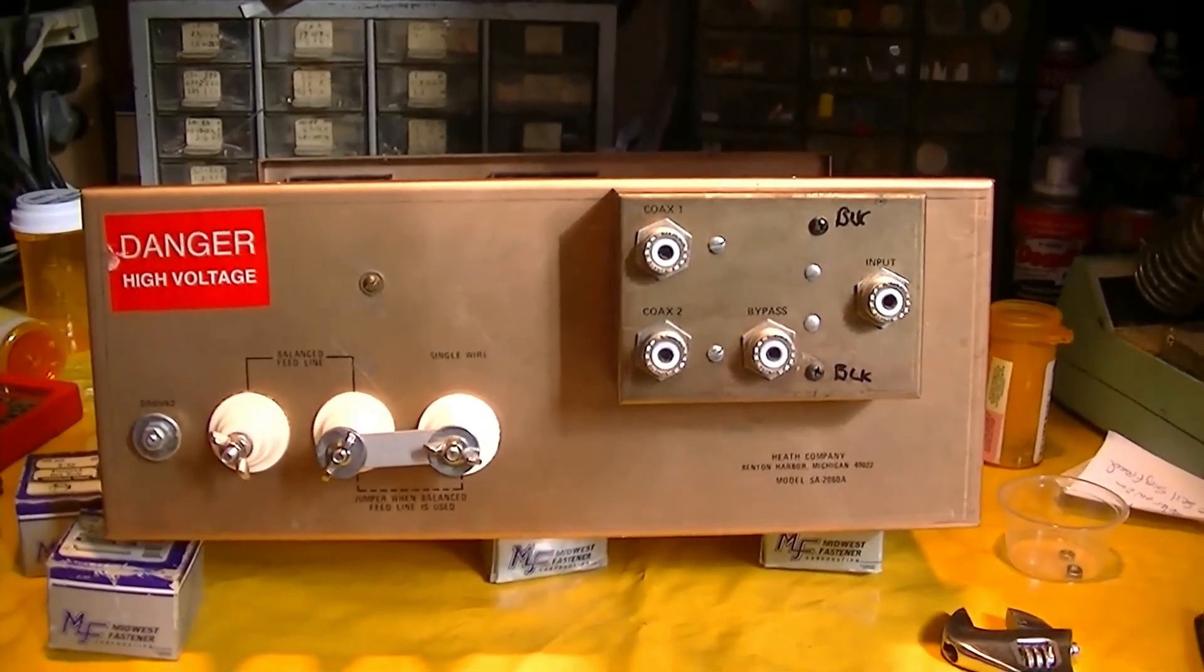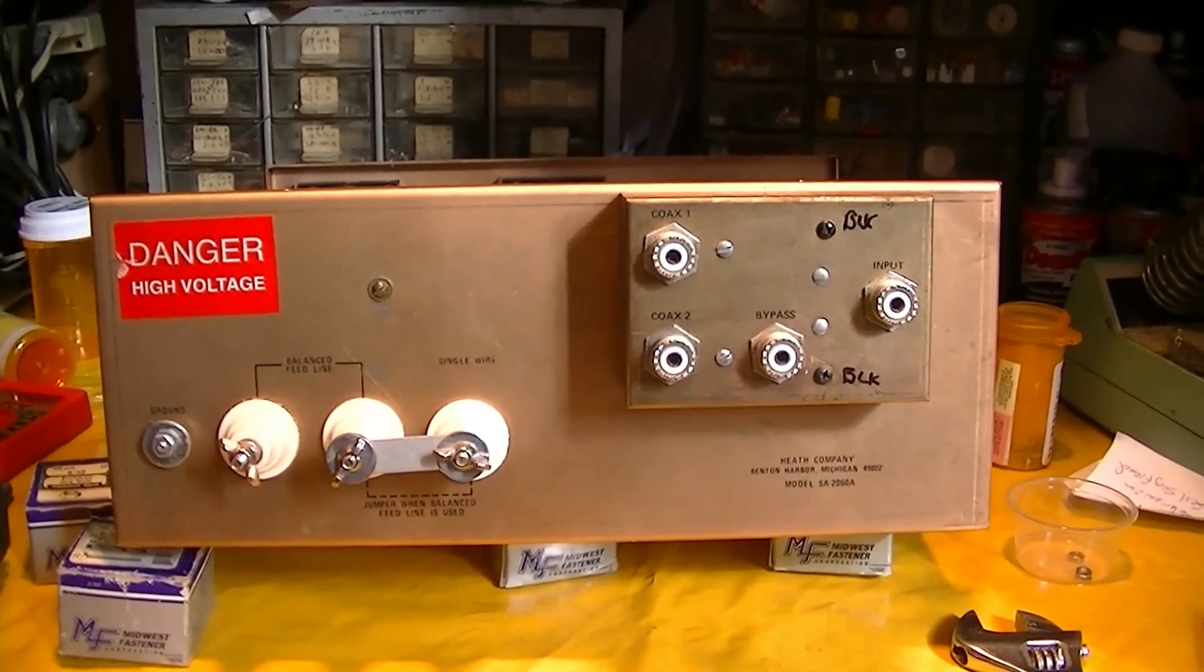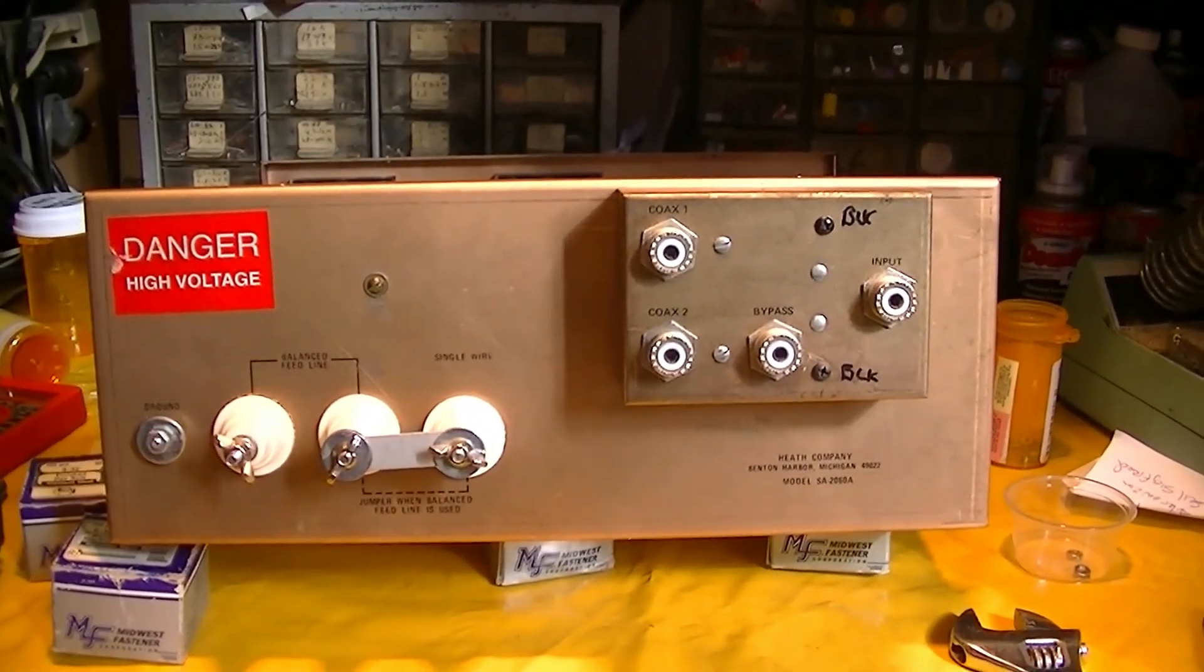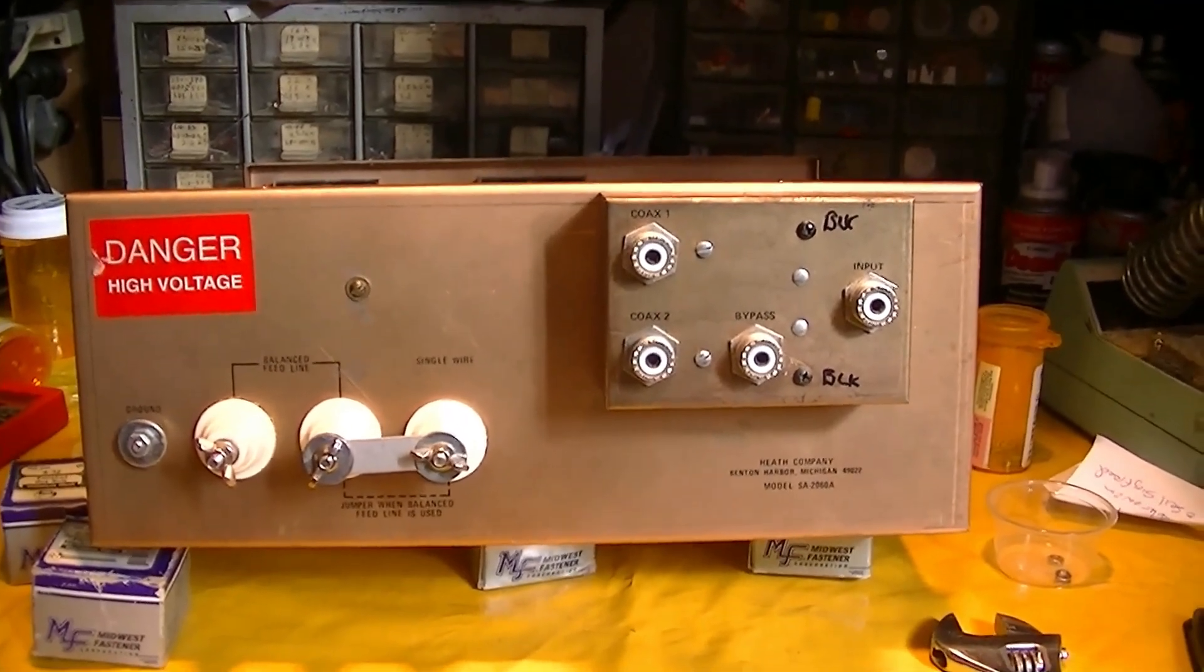This is the back of the Heathkit SA-2060 Alpha roller inductor antenna tuner. A very reliable heavy-duty antenna tuner, but I've encountered one problem with it.